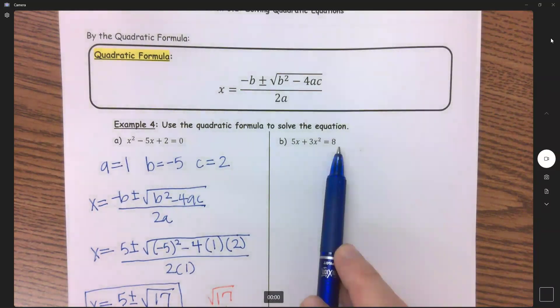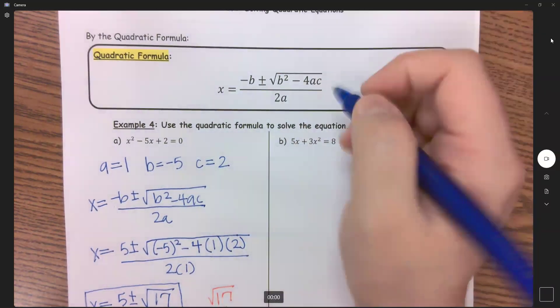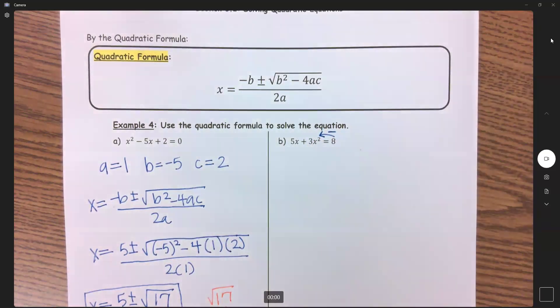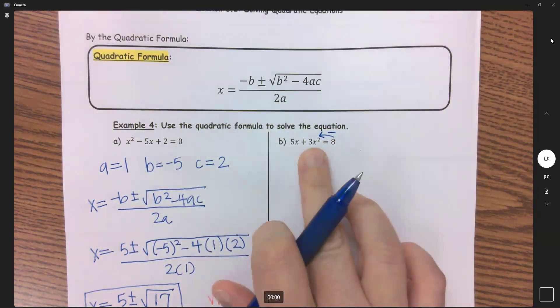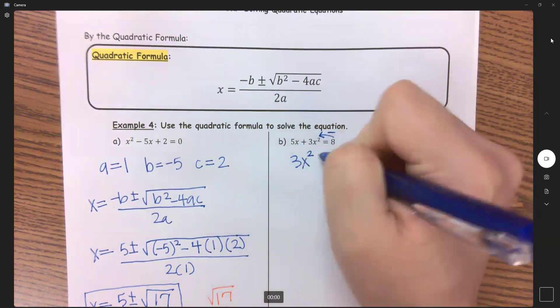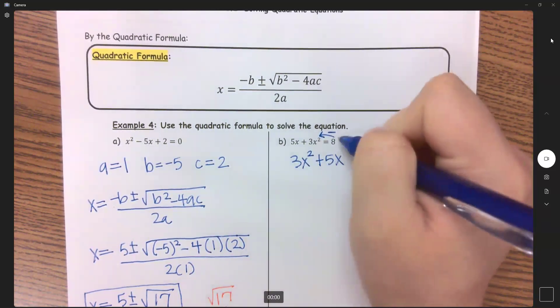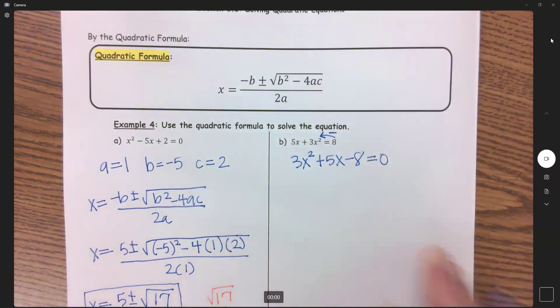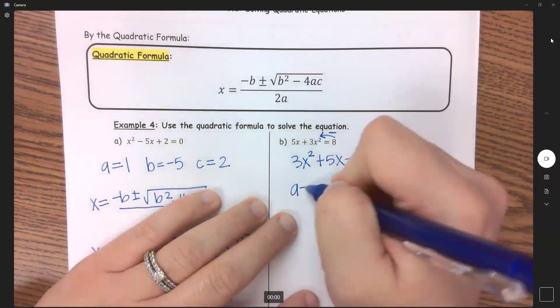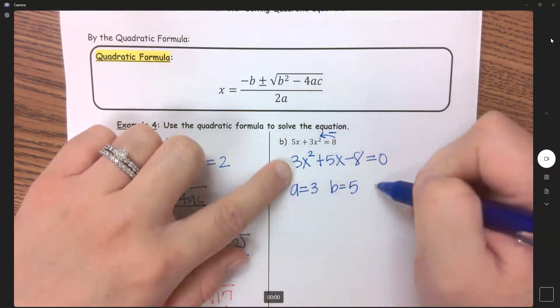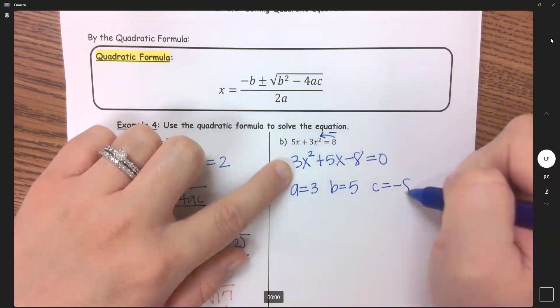Okay. On B, we don't have this in the correct form. So I need to move this over and we're subtracted over since that's a positive 8. I'm going to go ahead and put this in descending order. So I'm going to put my 3x squared first plus 5x and we're subtracting 8 over. So minus 8. Okay, from here, let's list our a, b, and c. So my a is 3, my b is 5, and my c is negative 8.